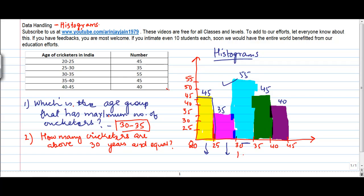so which are the graphs which appear on the 30 and 35 side we do this this and this so you can just simply do a sum of these three and you get 140 is the answer so there are 140 cricketers in all who are 30 years and above